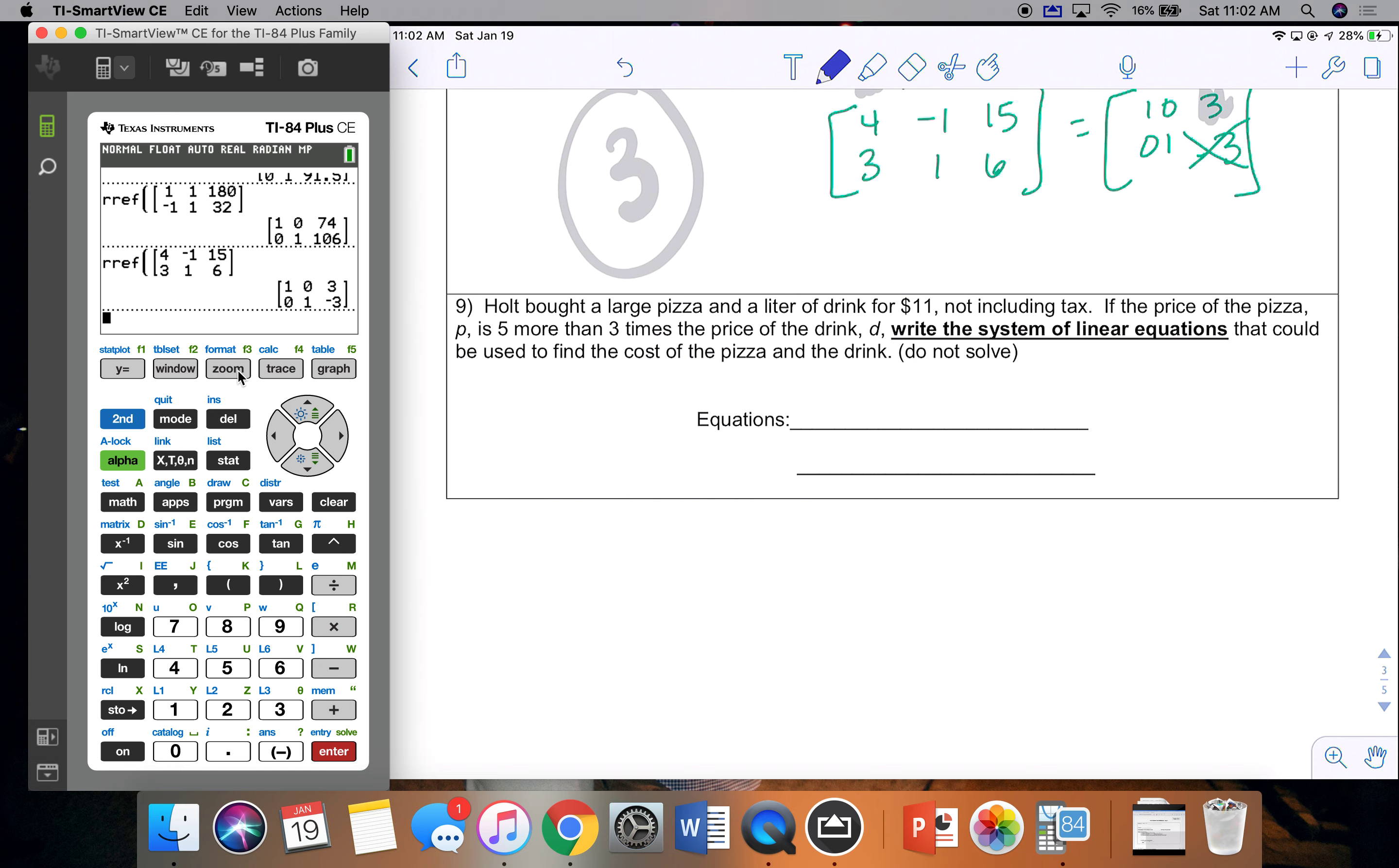Okay, and then the last problem on the retest review. Holt bought a large pizza and a liter of drink for $11, not including tax. If the price of pizza, P, is 5 more than 3 times the drink, D, write the system that could be used to find the cost, do not solve. So here they're telling us P is pizza. They're literally telling you that. And D is drink, again, literally telling you that as well. Write your equation.